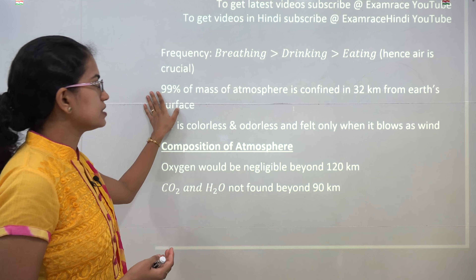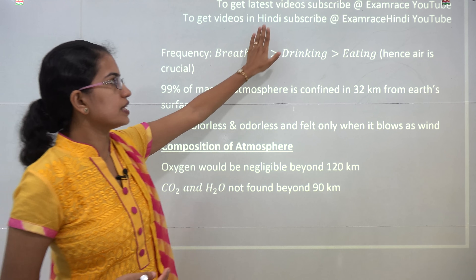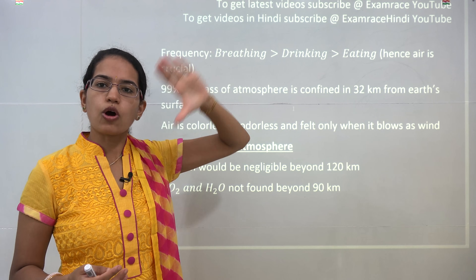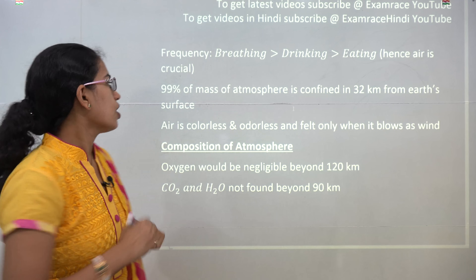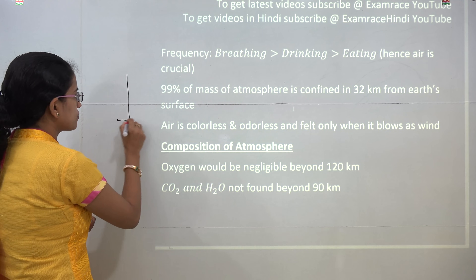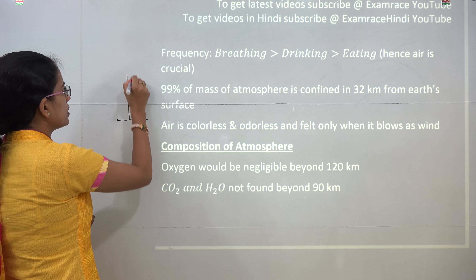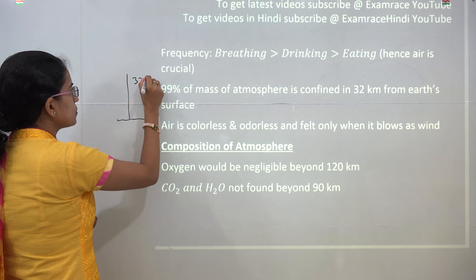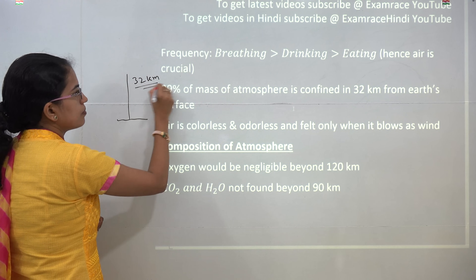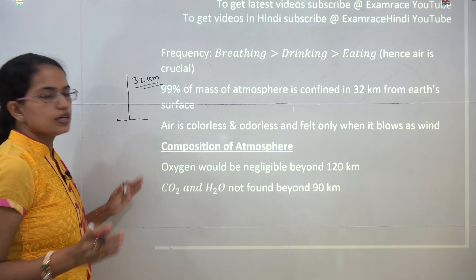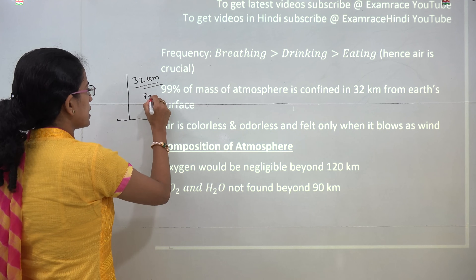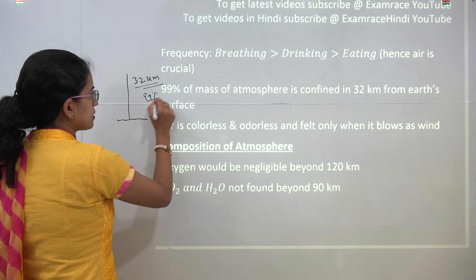99% of the mass of the atmosphere occurs in the top 32 kilometers from the surface. So if I start from the ground up to 32 kilometers, you have maximum of the atmosphere mass that is confined, which is 99%.